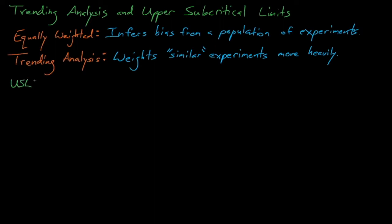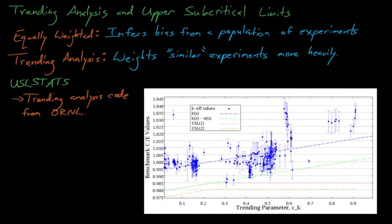The USL stats code from Oak Ridge, which is an unofficial part of the SCALE code system, is a trending analysis code that uses libraries of benchmark experiments to infer 95-95 confidence intervals for some target application. USL stats offers several linear regression based trending methods, and our goal when using the code is to develop a linear regression trend for the C over E values of benchmark experiments as a function of some similarity parameter, which we'll call x.